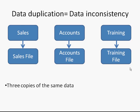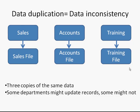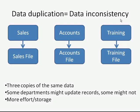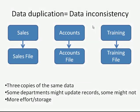So we'd have three copies of the same data. Some departments might update records, some might not, leading to data inconsistency. All of this meant more effort and more time spent updating the same information three times, and more storage space — whether physical storage in filing cabinets or electronic storage on computers.